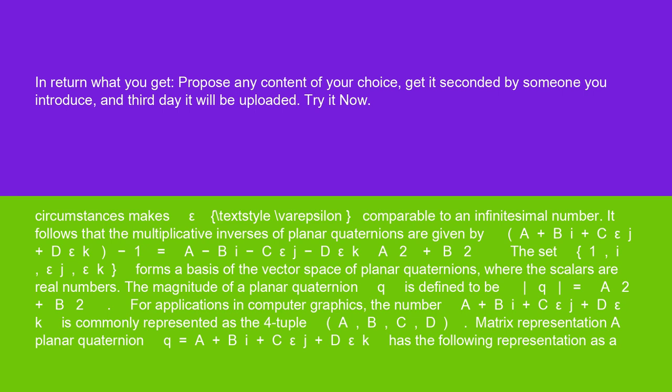It follows that the multiplicative inverses of planar quaternions are given by (A plus Bi plus C epsilon J plus D epsilon K)^-1 equals (A minus Bi minus C epsilon J minus D epsilon K) divided by (A^2 plus B^2). The set {1, i, epsilon J, epsilon K} forms a basis of the vector space of planar quaternions, where the scalars are real numbers.